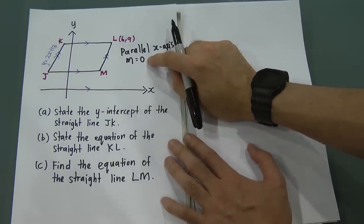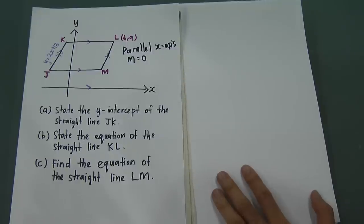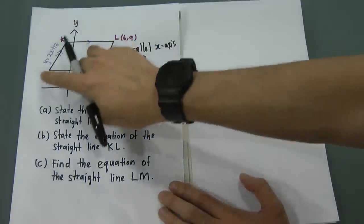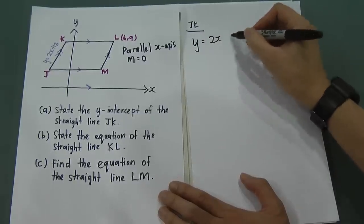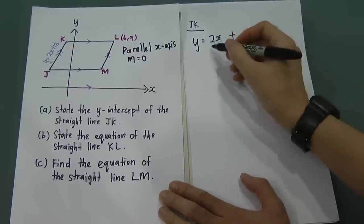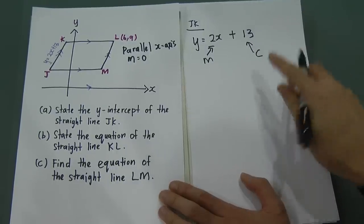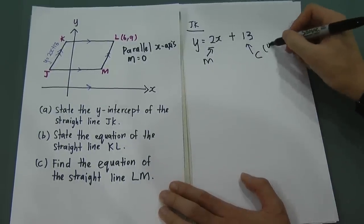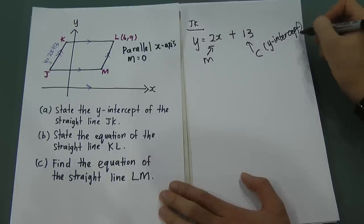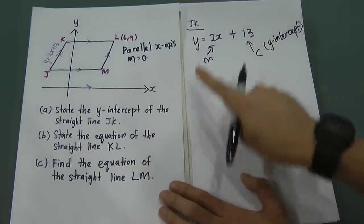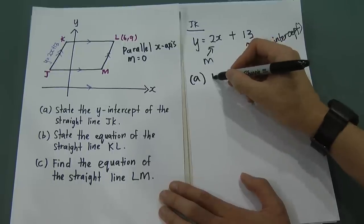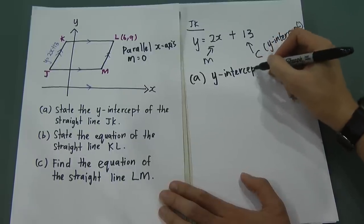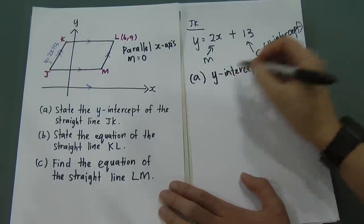Part (a) is very easy — it asks us to state the y-intercept of straight line JK. The equation of JK is y = 2x + 13. Here, 2 is m (the gradient) and 13 is c (the y-intercept). Therefore, the y-intercept of JK is 13.